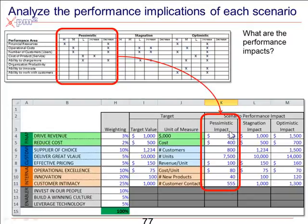In this example, on the pessimistic scenario, we're suggesting that revenue is going to go down from a million dollars to $500,000, and that costs are going to go from $500,000 only down to $400,000, and so forth. So across these three scenarios, we're trying to dollarize — or use performance metrics to reflect — what we think that scenario would have on our business as things stand.